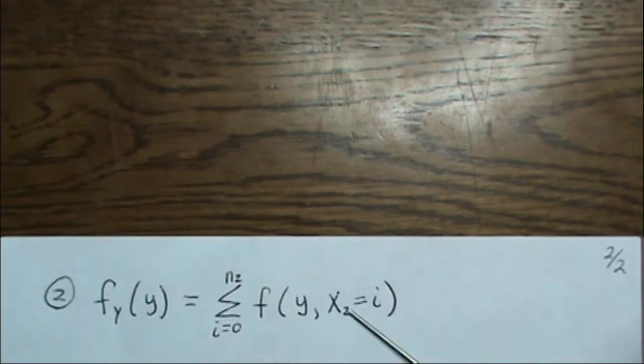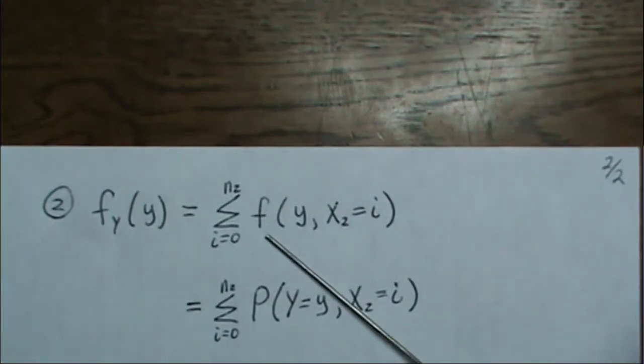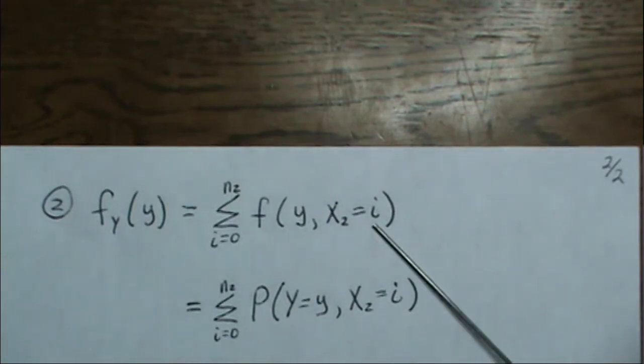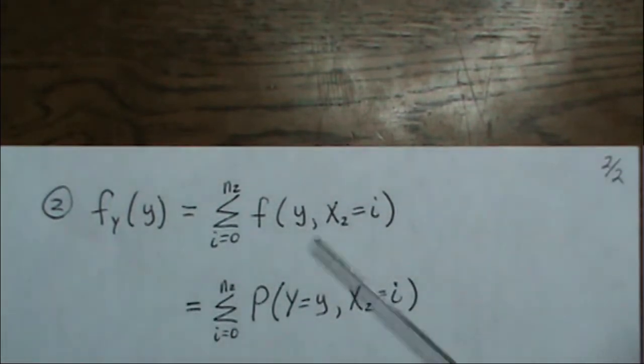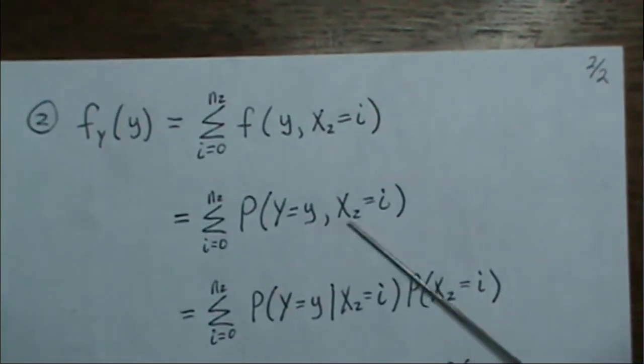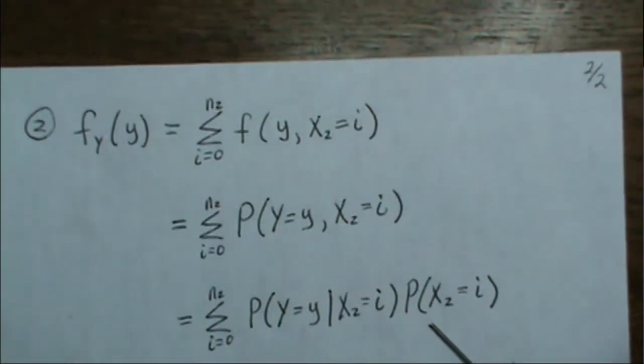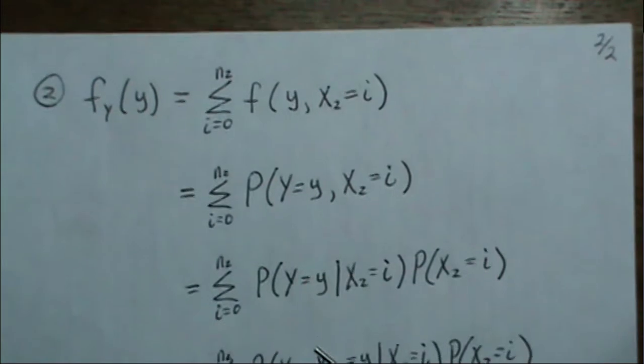Well, this is the joint density. And F really means probability. So F of Y, X2 equals i is really the probability that our random variable Y equals y, and here is X2 equals i. So I'm changing it into probabilities. And then when you have a joint distribution, you can manipulate into a conditional times a marginal. So just standard manipulation here.